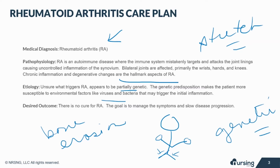While there is no cure for RA, the goal is to manage the symptoms and slow the disease progression. Medication, physical and occupational therapy, and possible surgery may be necessary.